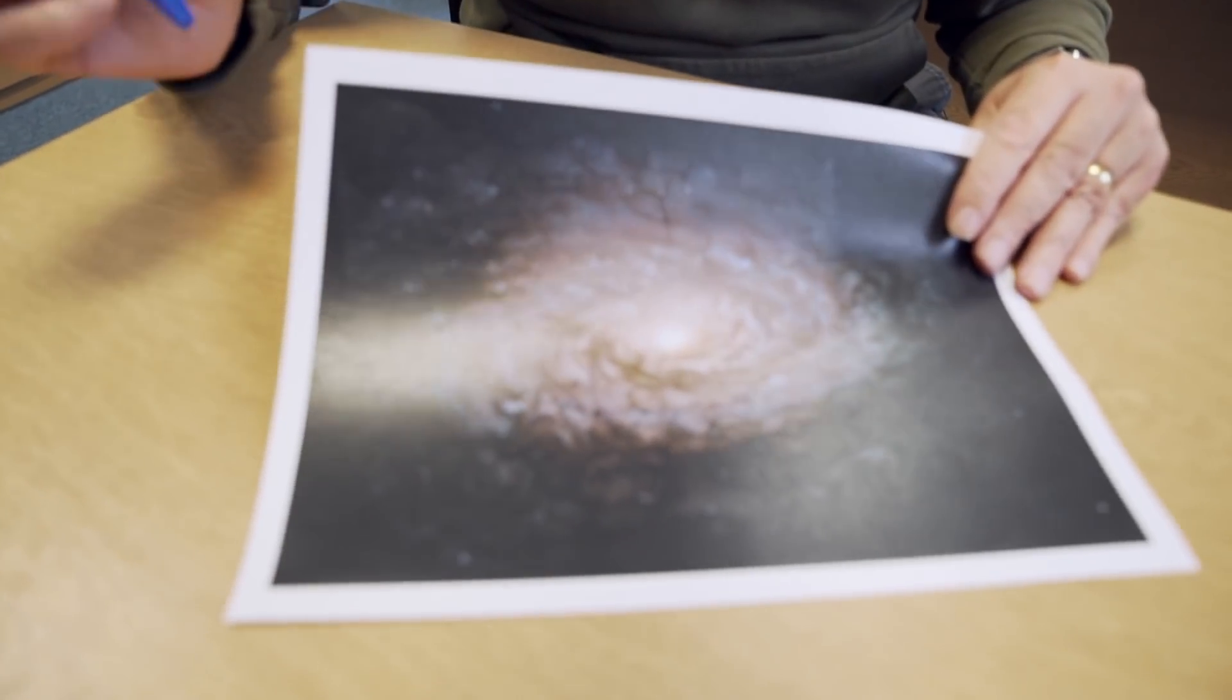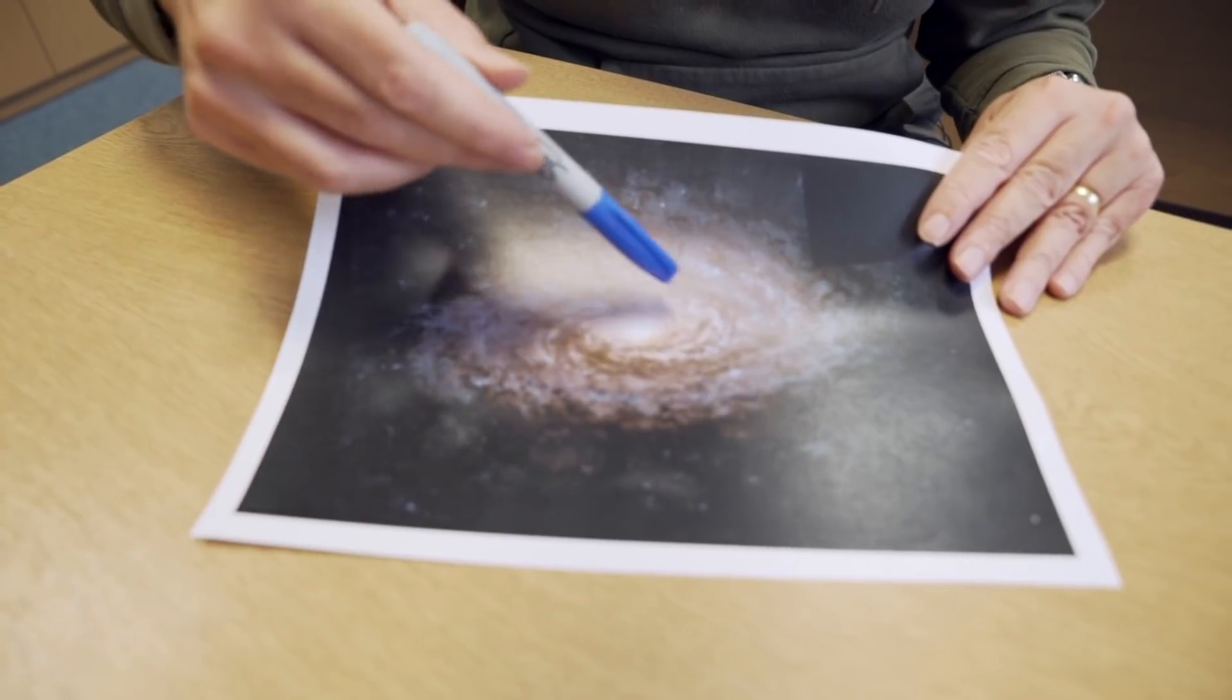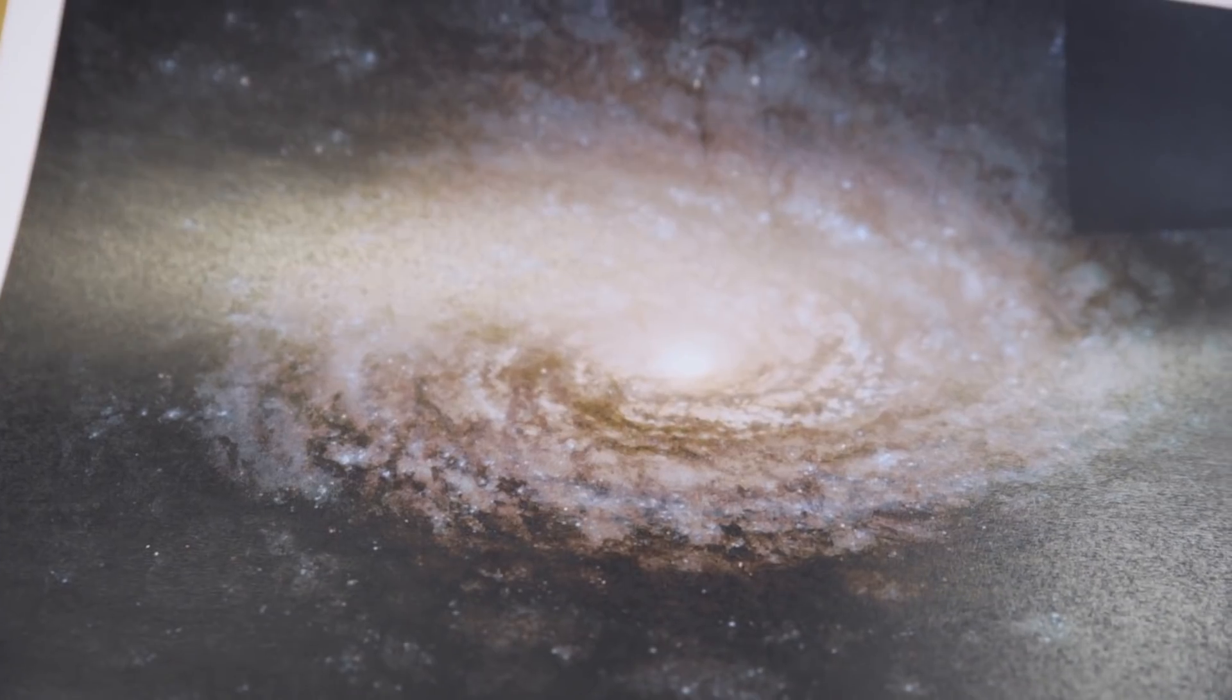Here we have the other extreme, which is flocculent spiral structure. You can't pick out two arms here. There's just lots of little tiny bits of spiral structure. And here we think there might be a different piece of physics as to what's going on.